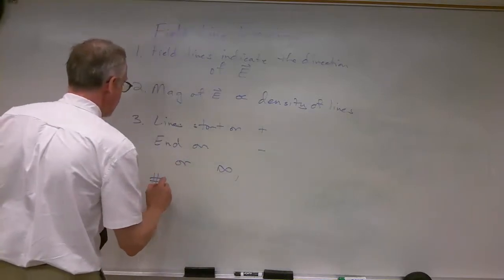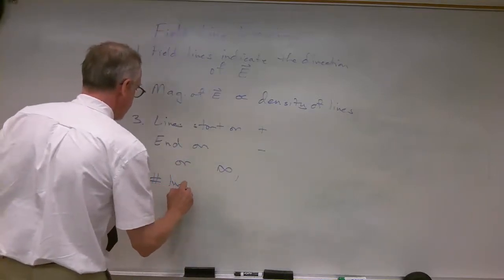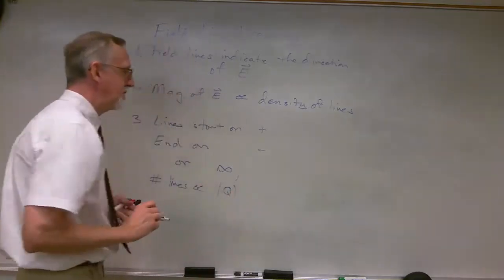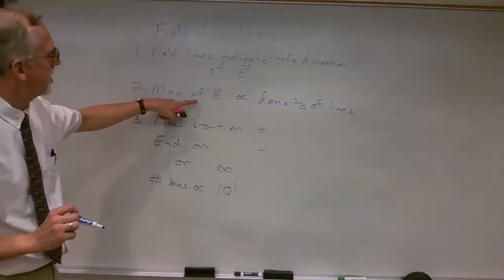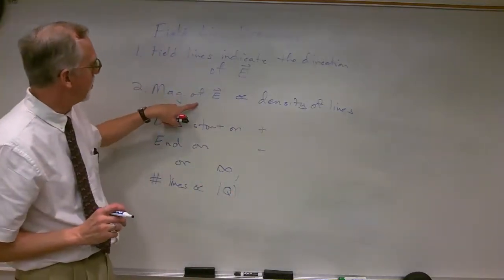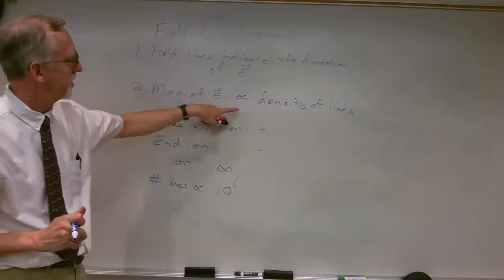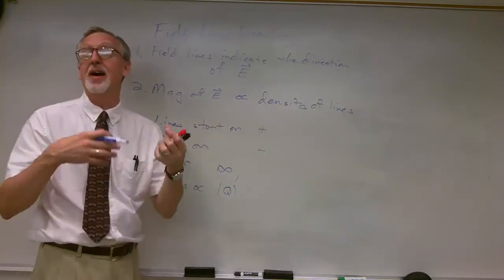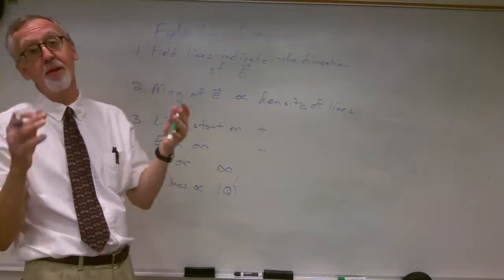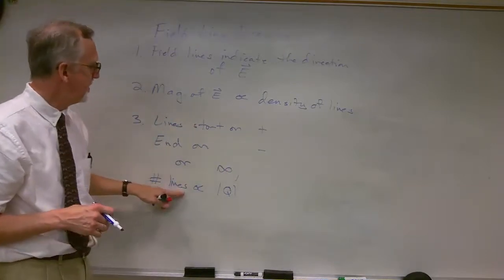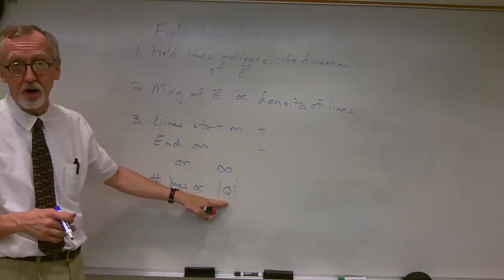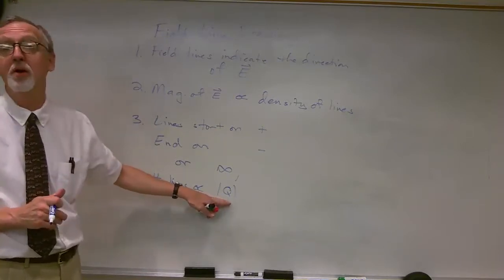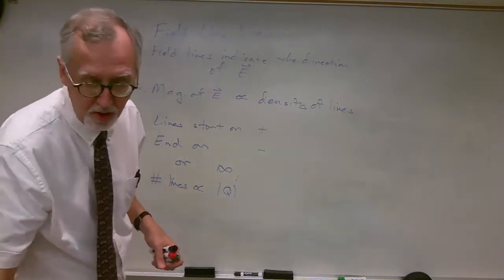The number of lines is proportional to the magnitude of the charge. This comes back to the earlier point — the magnitude of the electric field is proportional to the density of lines. We know that bigger charges produce a stronger field, meaning more lines. So the number of lines coming out of or going into a charge will be proportional to the magnitude of that charge.